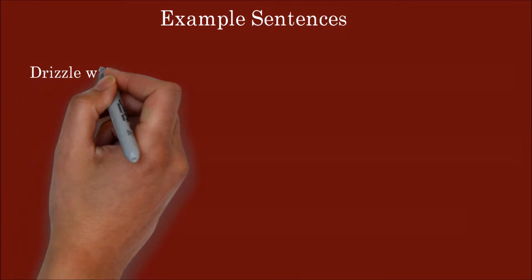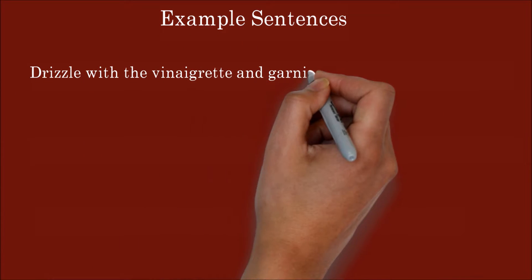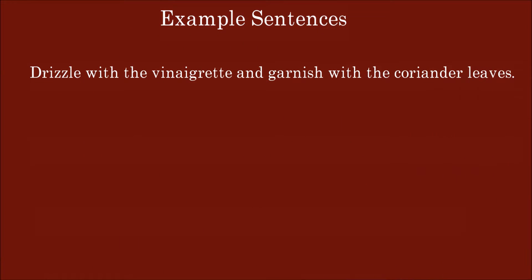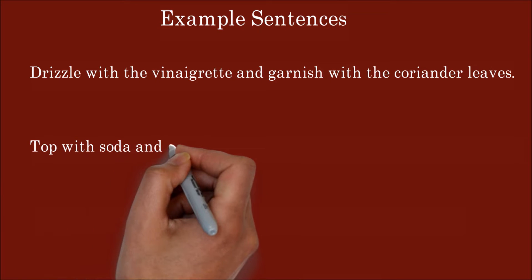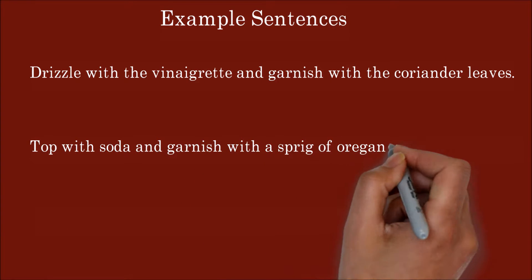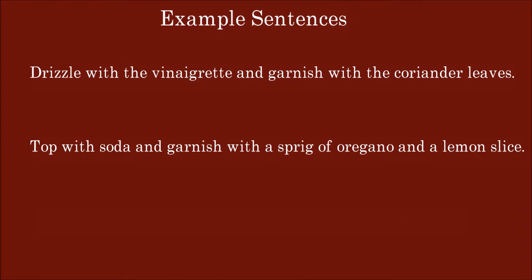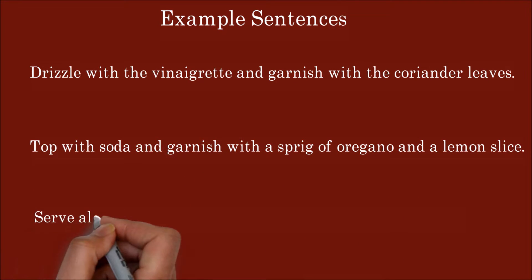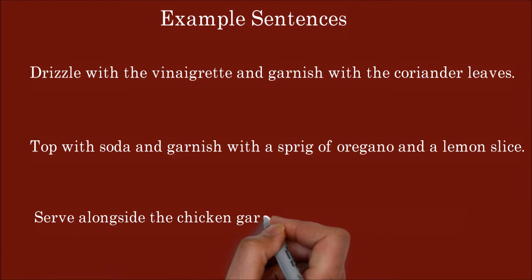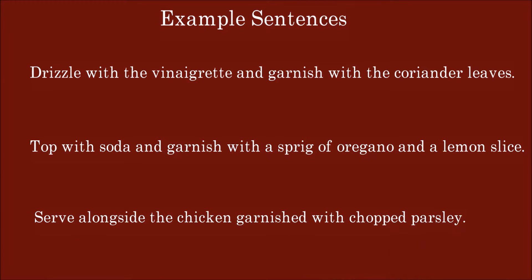Let's see some examples of garnish. Dress with the vinaigrette and garnish with the coriander leaves. Top with sauce and garnish with a sprig of oregano and a lemon slice. Serve alongside the chicken garnished with chopped parsley.